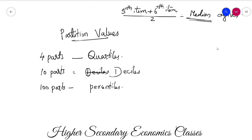These partition values — deciles and percentiles — are important. When we divide data into 4 parts, we get Q1, Q2, and Q3 as the three dividing points, giving us 4 equal sections.